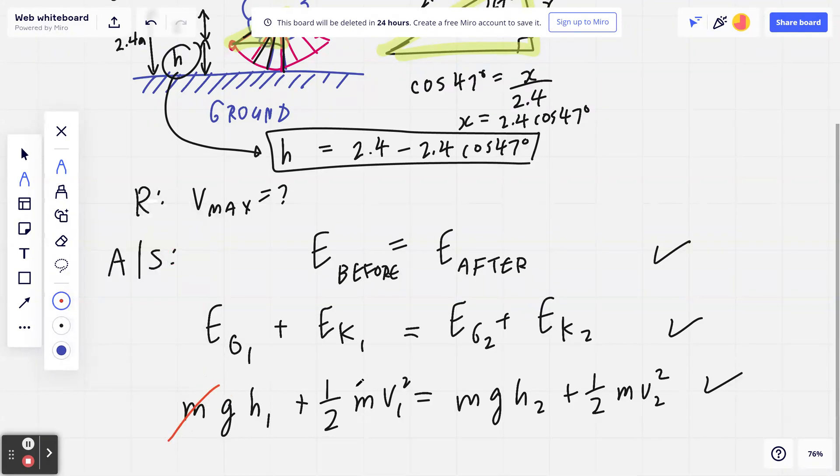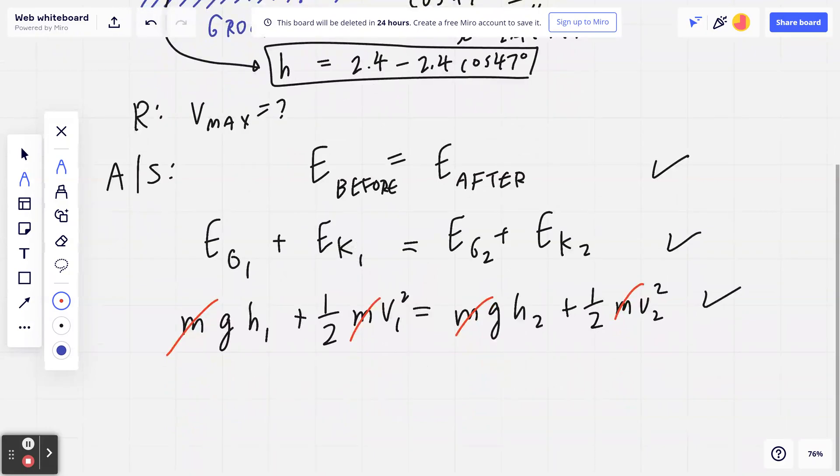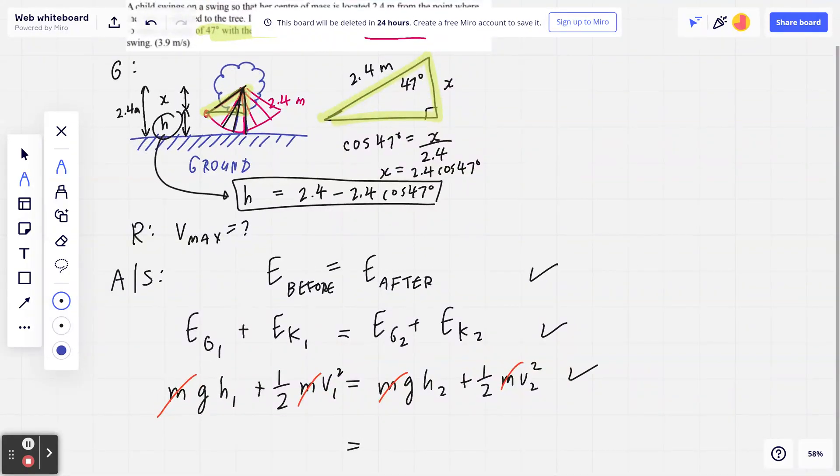Notice I can cross out m from both sides, so this is independent of m, the mass of the object. I think about this first part - I'm going to redraw this again for you. If you think about this specific location, this is when she starts to swing. At that specific moment she has maximum potential gravitational energy, and because she's not moving there's no kinetic energy whatsoever. In the before picture, I'm going to write down gh1. Now think about the energy after - the moment she starts swinging there is no gravitational potential energy, but there is kinetic energy.